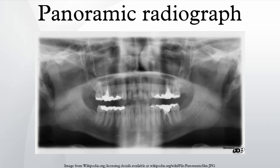Persons who are to undergo panoramic radiography are usually required to remove any earrings, jewelry, hairpins, glasses, dentures, or orthodontic appliances. If these articles are not removed, they may create artifacts on the image and reduce its usefulness. There is also a need for the person to stay absolutely still during the 18-or-so second cycle it takes for the machine to expose the film. For this reason, radiographers often explain to the person beforehand how the machine will move.